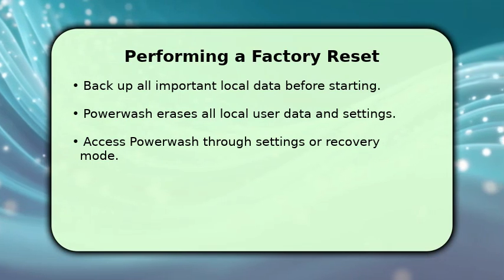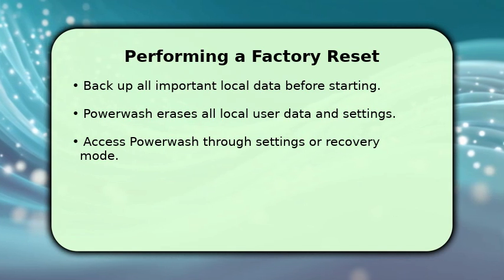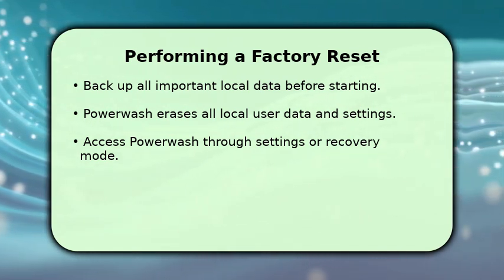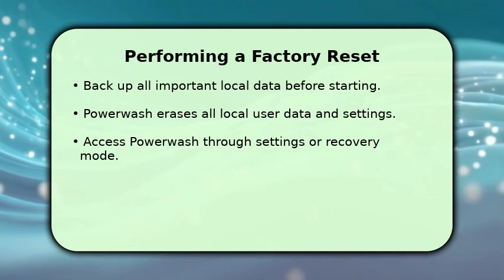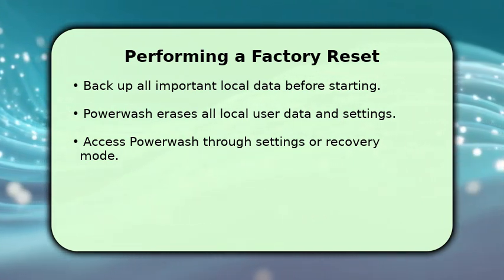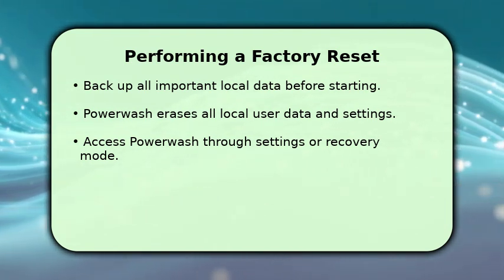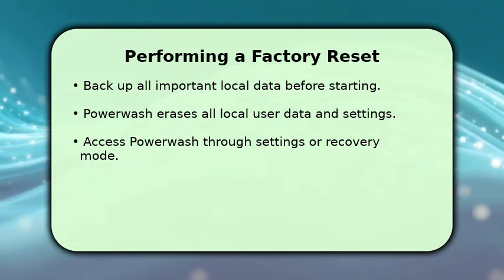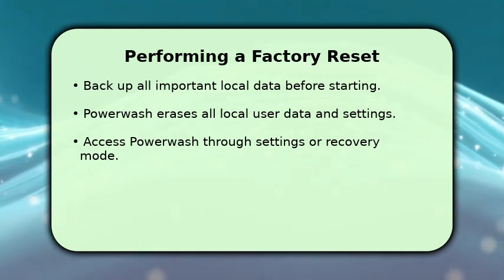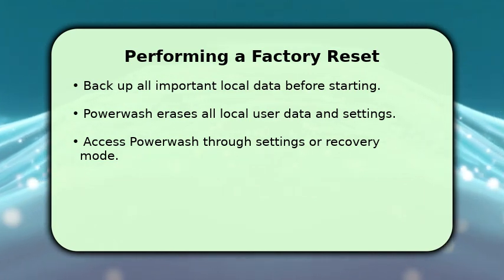To initiate a factory reset, also known as a power wash, first ensure all your important local data is backed up. This process will erase everything on the device, returning it to its original state. You can typically find the power wash option within the Chromebook settings under the About Chrome OS section, or by using a specific key combination during startup to enter recovery mode. Follow the on-screen prompts carefully to complete the reset, which usually takes several minutes.